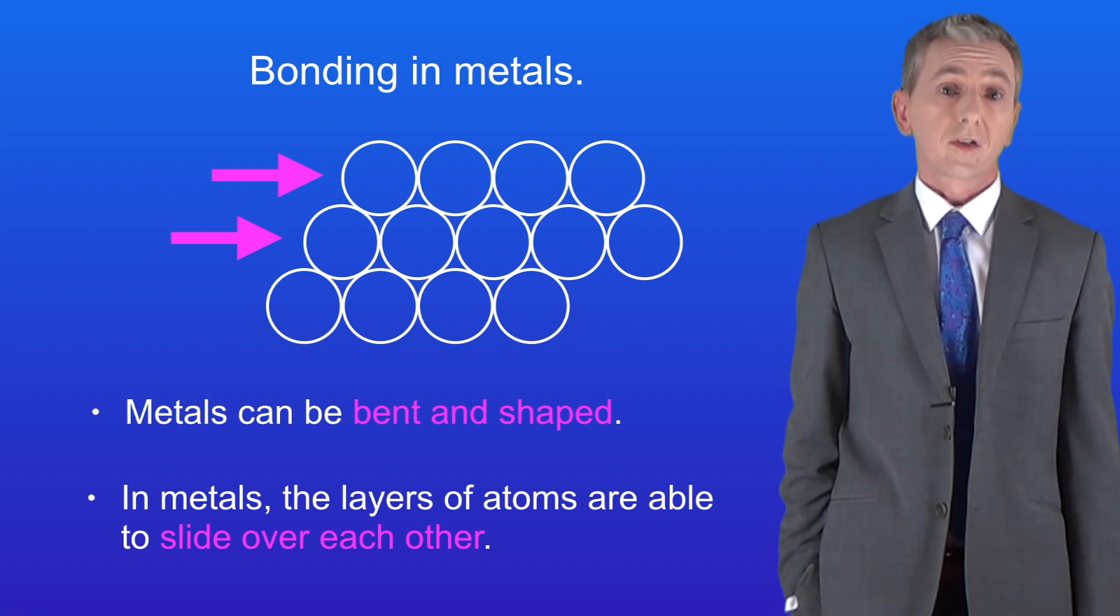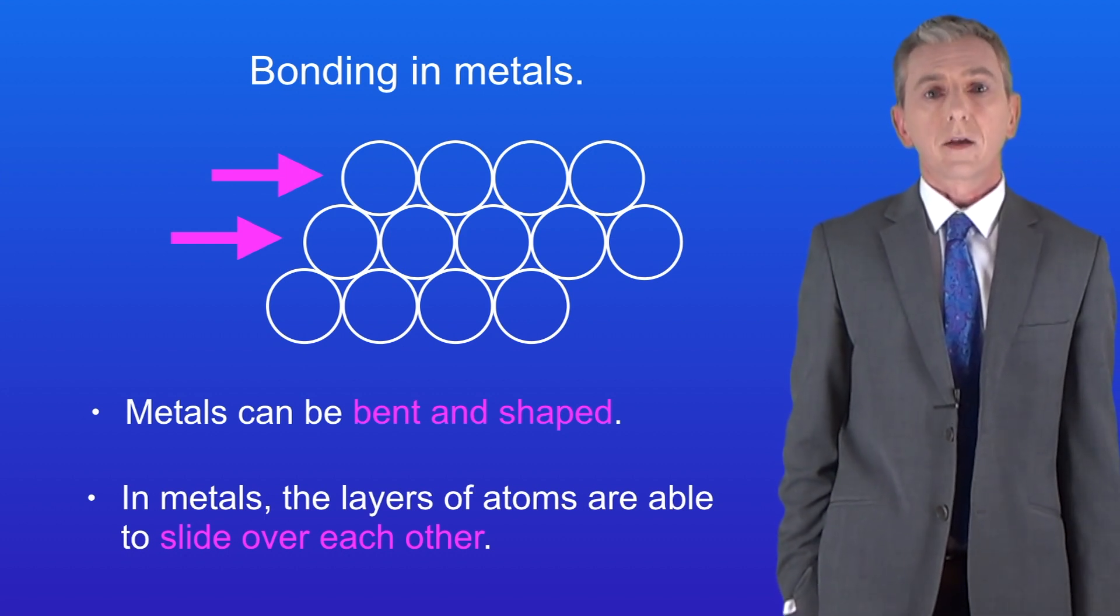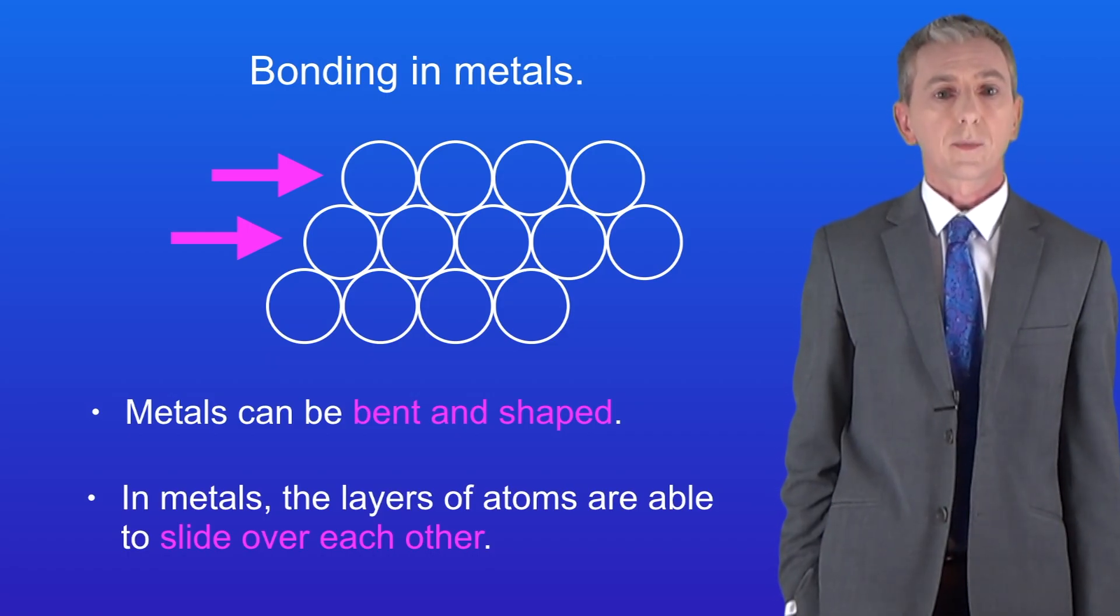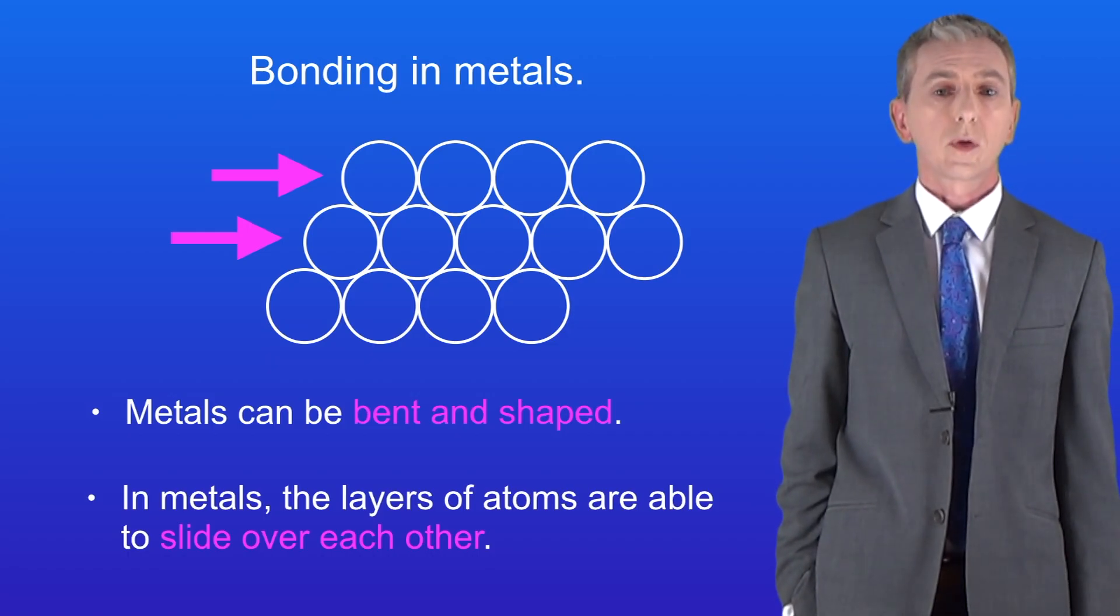Now this does give us a problem. Some pure metals just aren't hard enough to be useful. This includes copper, gold, iron and aluminium. So we need to make these metals harder, and to do that we make an alloy.